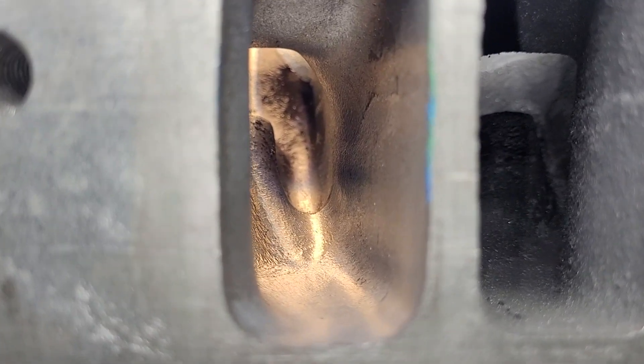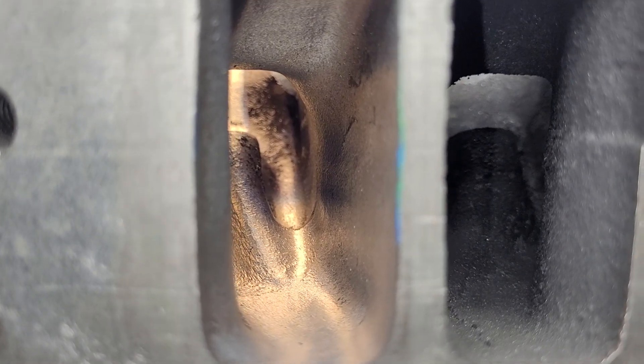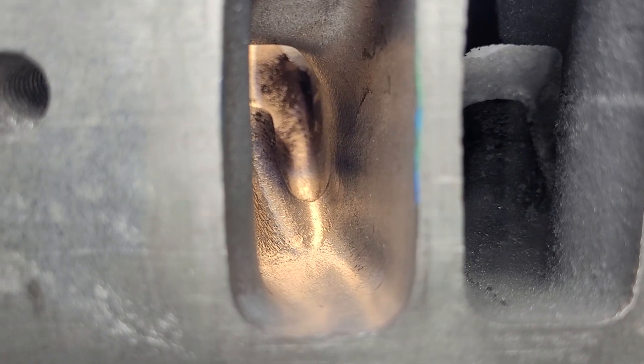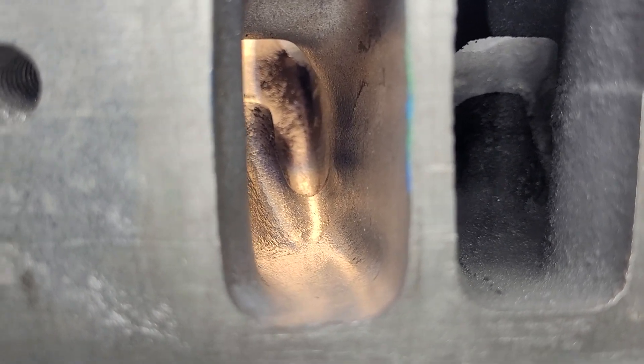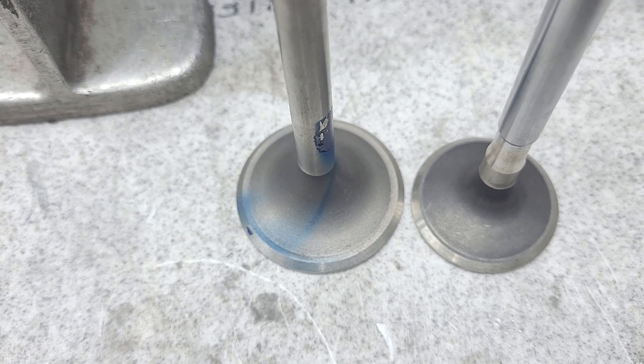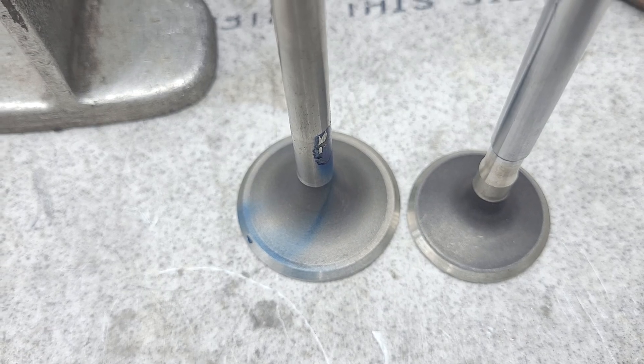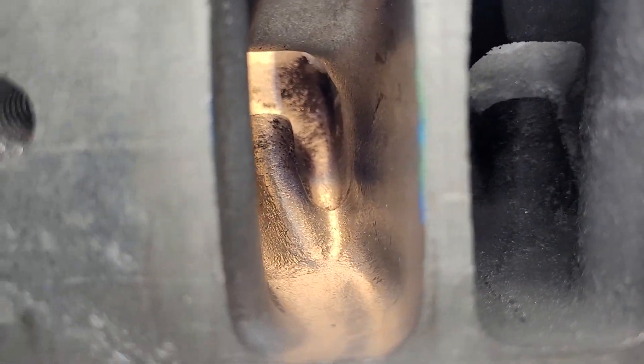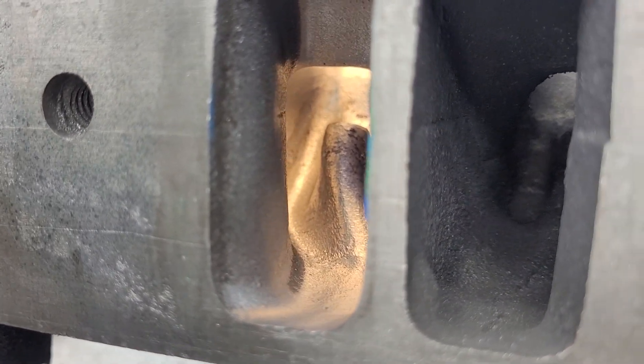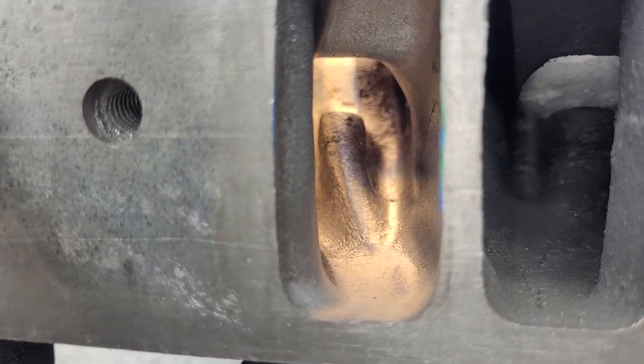Hey guys, Rob brought over some 915 J heads and we flowed them completely stock. He brought over some brand new Melling exact replacement valves. Melling was actually my German grandmother's name, by the way. I wish they'd shown the company, that would have been cool.